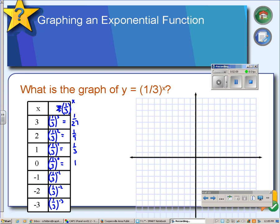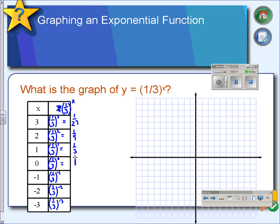When our exponent is 0, we get 1. And remember, a negative exponent means make a reciprocal. So 1 third made a reciprocal is 3. And 1 third to the negative 2 is going to be 9, 3 squared. And finally, we get 27. And then we can plot these points.